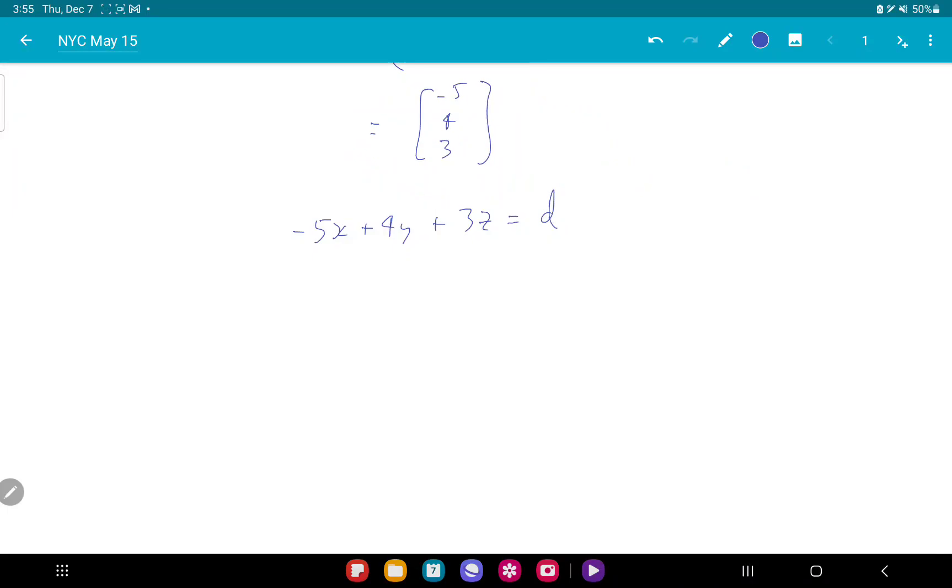Plug that into my plane: -5 times 2, plus 4 times 1, plus 0 is d. So I get 4 minus 10 is -6, so I get -5x plus 4y plus 3z is -6. Now the last question, part D.